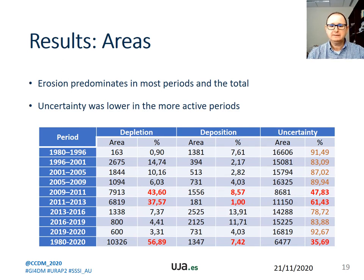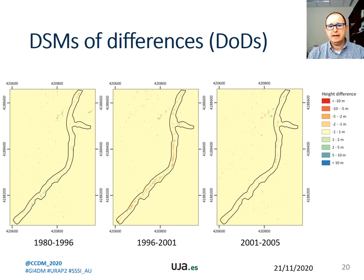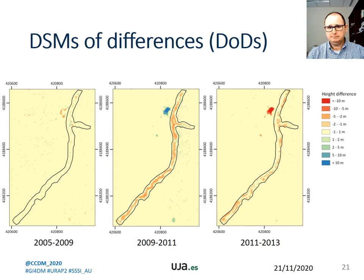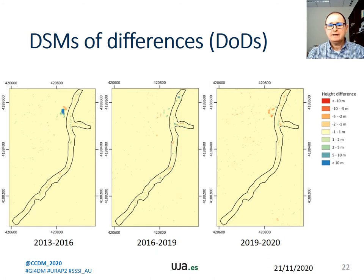Regarding results in areas, most periods and the total period presented a predominance of erosion over deposition, but the uncertainty area was very high. Uncertainty was lower in the more active periods — 2009–2011 and 2011–2013 — where depletion processes predominated over deposition. In the first three periods there are few differences, a little more in the period 1996–2001. In the next periods, the differences are remarkable in 2009–2011 and also in 2011–2013. And finally, in the last three periods, few differences are observed again.